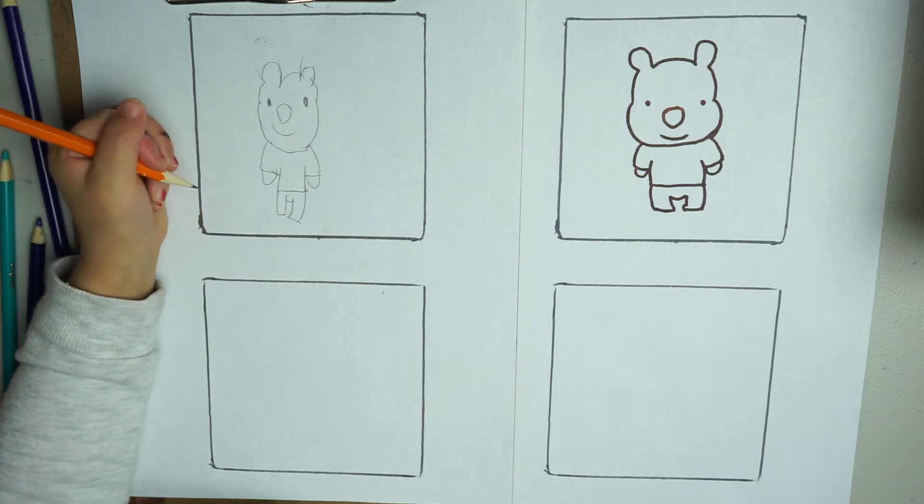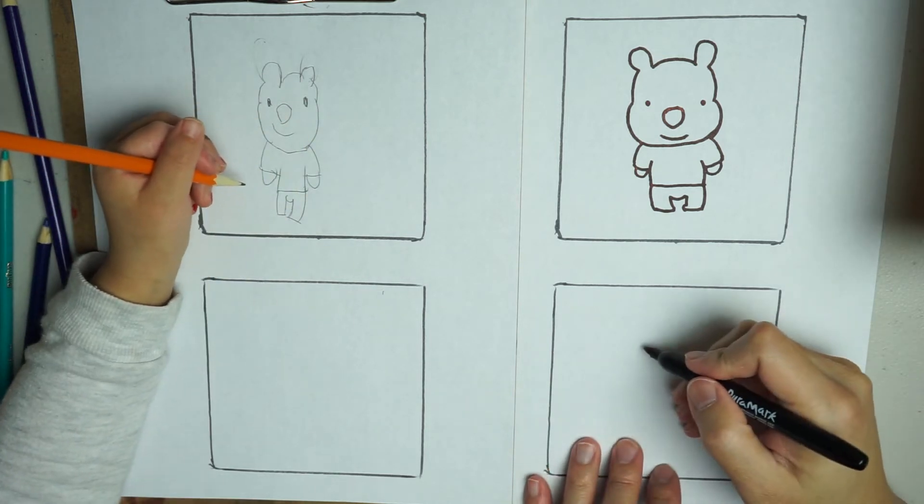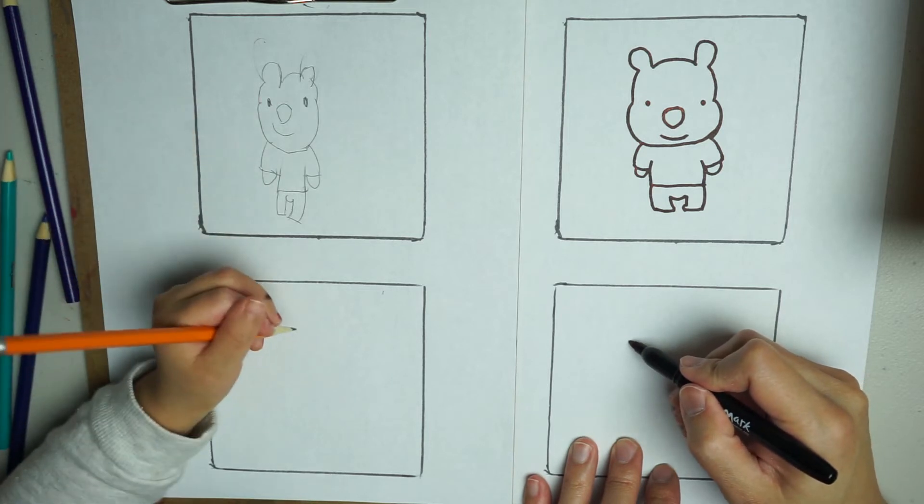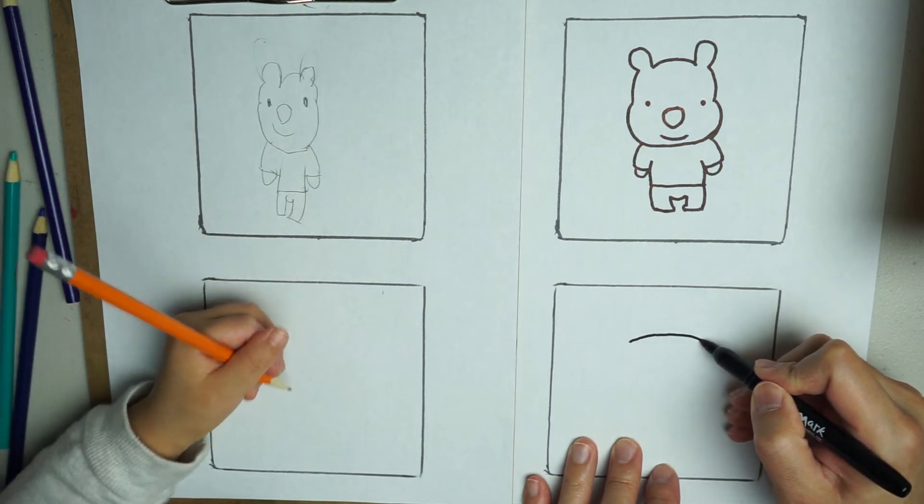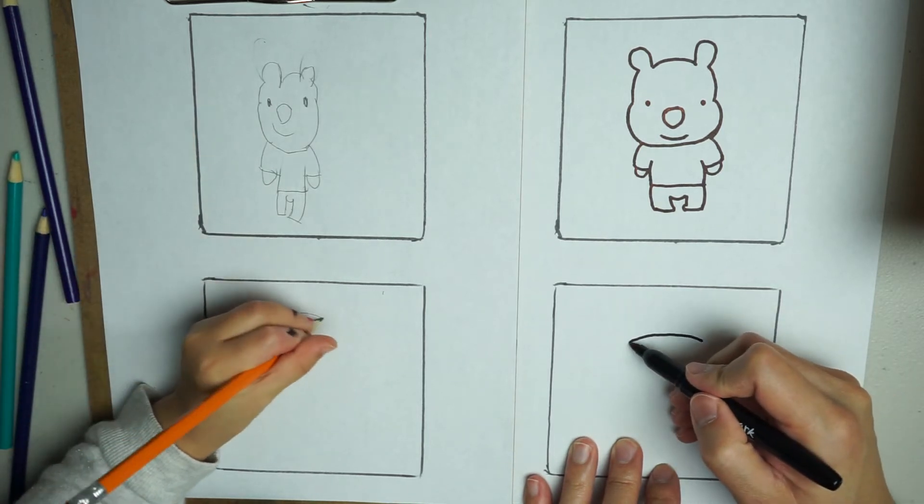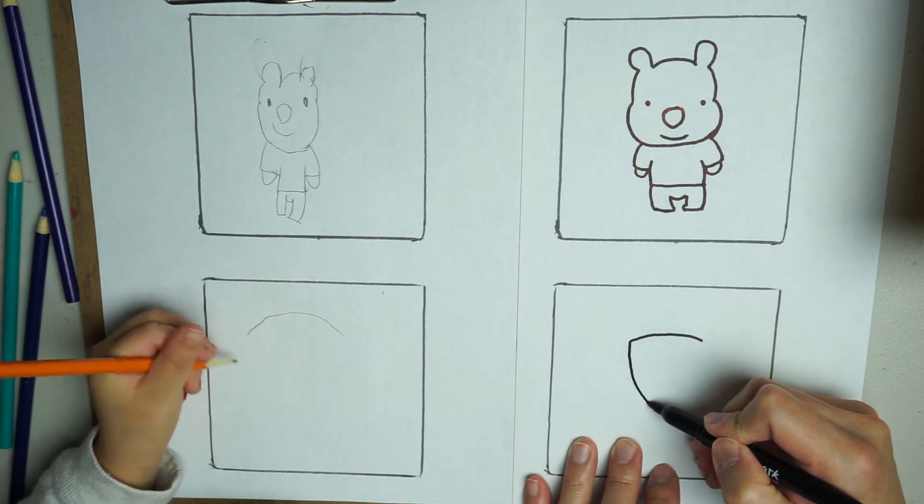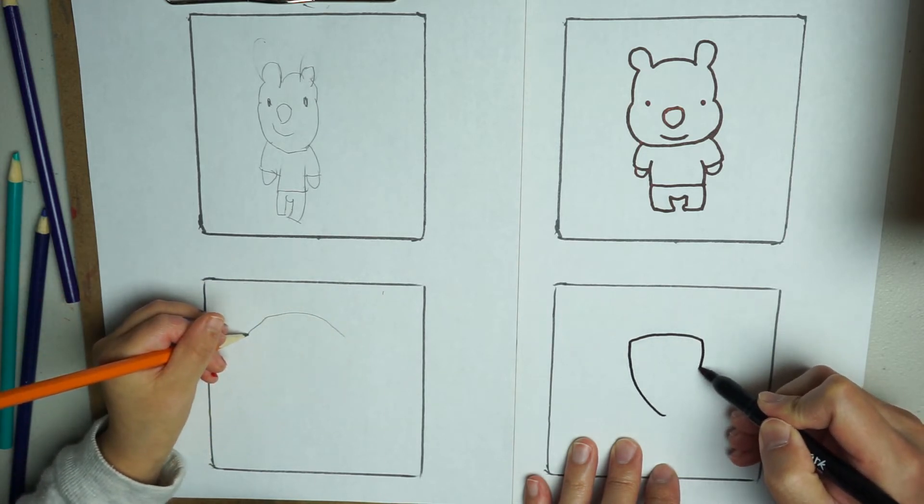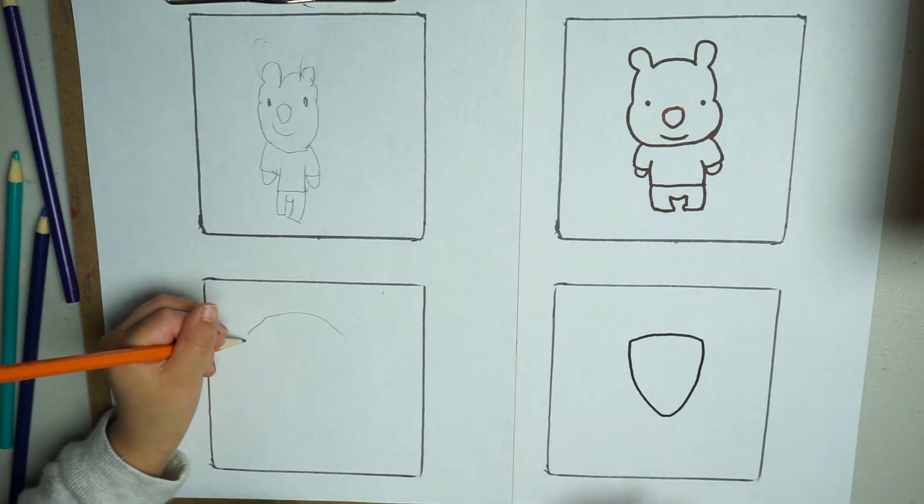Now we are going to draw Tigger. First, we are going to draw his head. It is a triangle. Curve like this. Then curve down. The rounded corner. Not pointing.